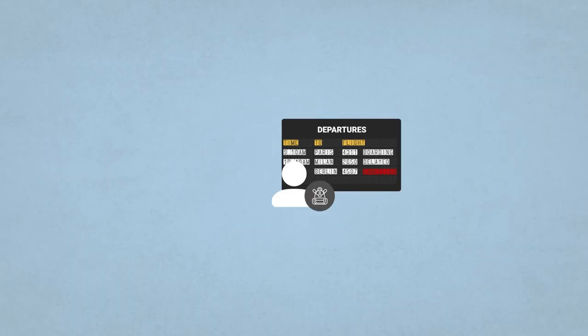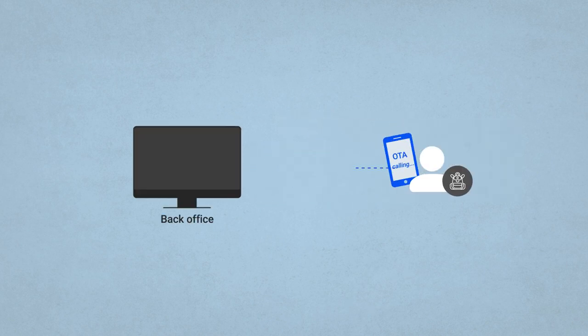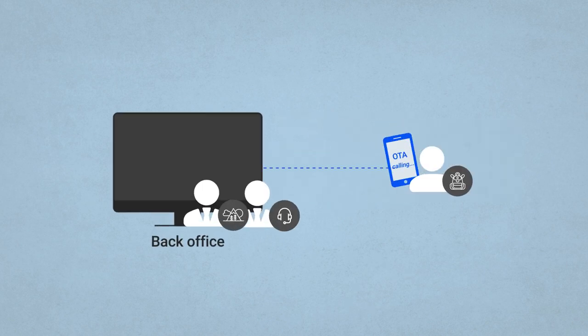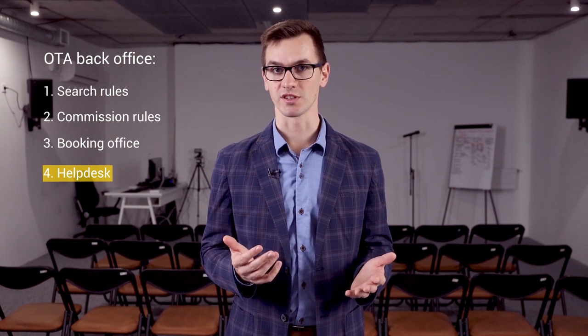The first thing a traveler would do in these circumstances is try to connect with a travel agency. Travel agents and customer support must have means of communication with people, a help desk. Some travel agencies would have a dedicated customer support division and a call center. And the back office system would have an integrated voice-over IP to communicate with travelers by phone.